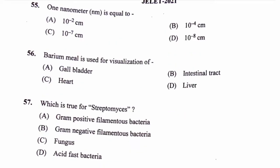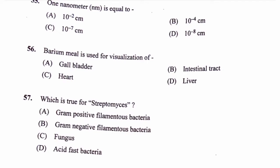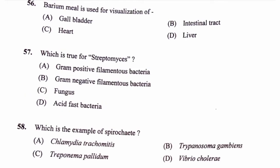Question number 56. Barium meal is used for visualization of: option A, Gallbladder; option B, Intestinal tract; option C, Heart; option D, Liver. The correct answer is option B, Intestinal tract. A barium meal is a diagnostic test used to detect abnormalities of the esophagus, stomach, and small bowel using X-ray imaging. X-rays can only highlight bone and other radio-opaque tissues and would not usually enable visualization of soft tissue, which is why barium meal is used.